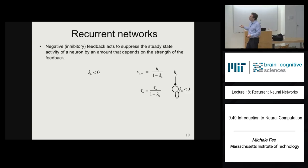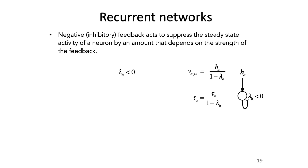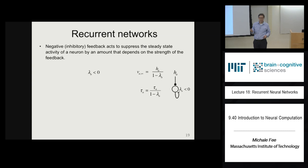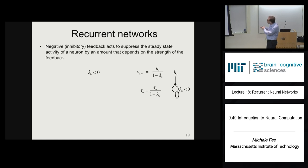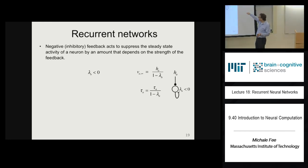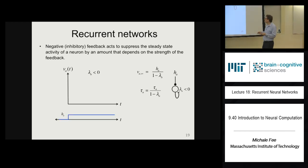Now let's consider lambda less than zero. What does that correspond to in neurons? Inhibition. So you put an input in trying to activate the neuron, but that neuron inhibits itself. Positive feedback made the response bigger, so with inhibition, the response will be smaller. For lambda equals negative one: v_infinity is h over 1 minus negative 1, which is h over 2. The response is smaller. Also importantly, the response is actually faster.